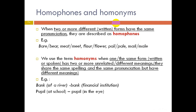Homophones: when two or more different written forms have the same pronunciation, they are described as homophones — homo means 'the same,' phone means 'sound.' Examples: burr/burr, meat/meet, flower/flour, pale/pail, male/mail. They are two different words with the same pronunciation.